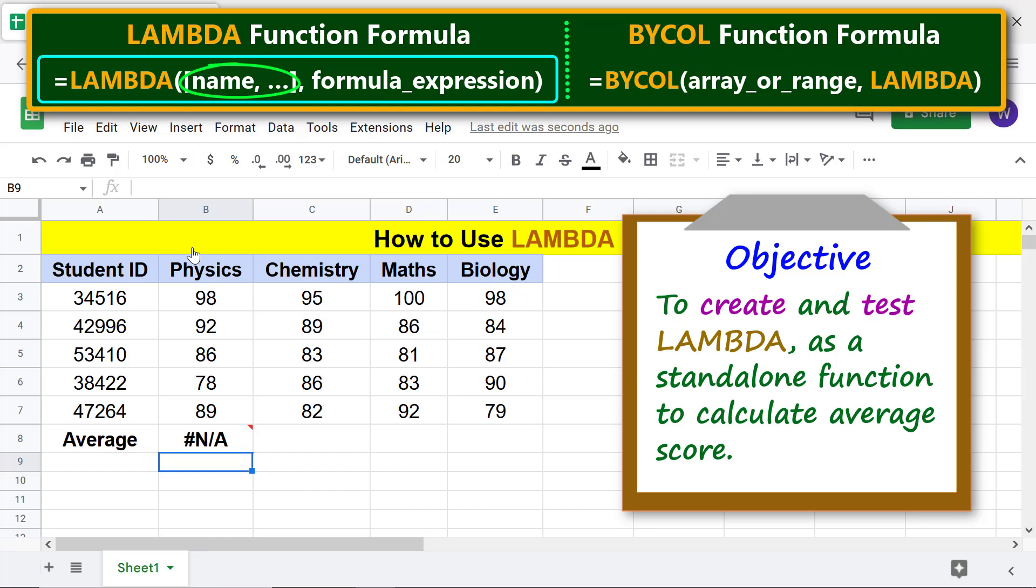So, let's go ahead and call the function by passing this range as the value. Click this cell. Click here and type the opening parenthesis. Select this range. Type the closing parenthesis and press enter. Alright, LAMBDA has returned the average of these scores.